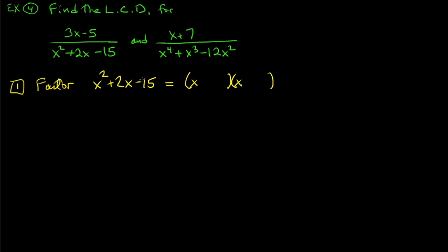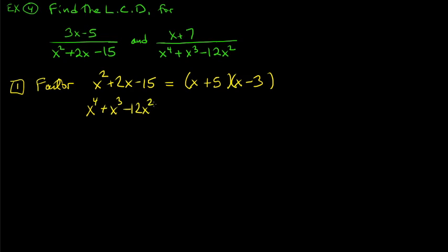We need two numbers that multiply to −15 and add to +2: that's 5 and −3. So x squared + 2x − 15 factors as (x+5)(x−3). For the other denominator, x to the fourth + x cubed − 12x squared, the GCF is x squared, so we factor that out first, leaving x squared times (x squared + x − 12).